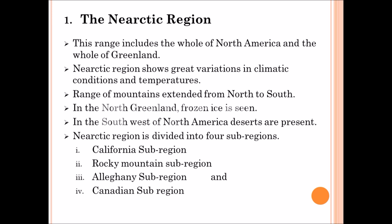The first region is the Nearctic region. It includes North America and grasslands. In this region, there are great variations of climatic conditions like temperature. It extends from the North to the South region of America. The North region contains very cold climate; the South region contains very hot climate. In the North, we can see frozen ice and greenlands. In the South region of North America, we can also see the desert. The Nearctic region is divided into 4 sub-regions: California sub-region, Rocky Mountain sub-region, Allegheny sub-region, and Canadian sub-region.